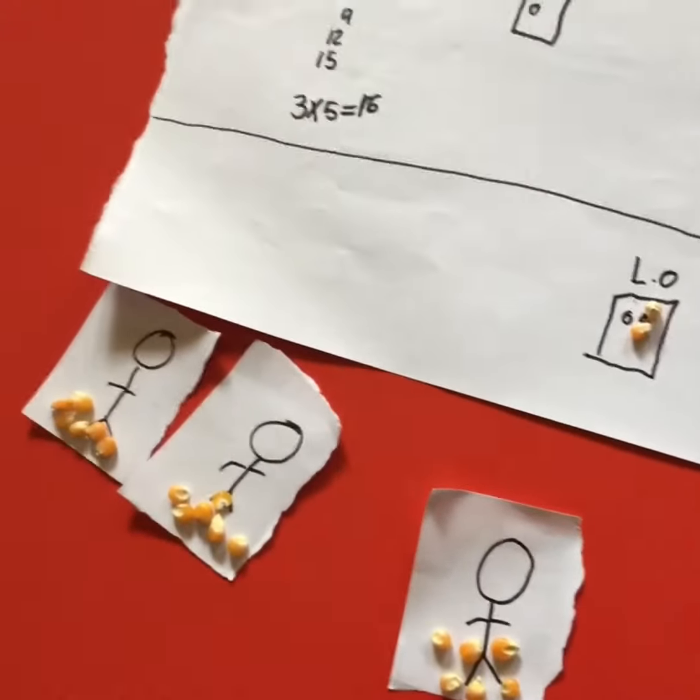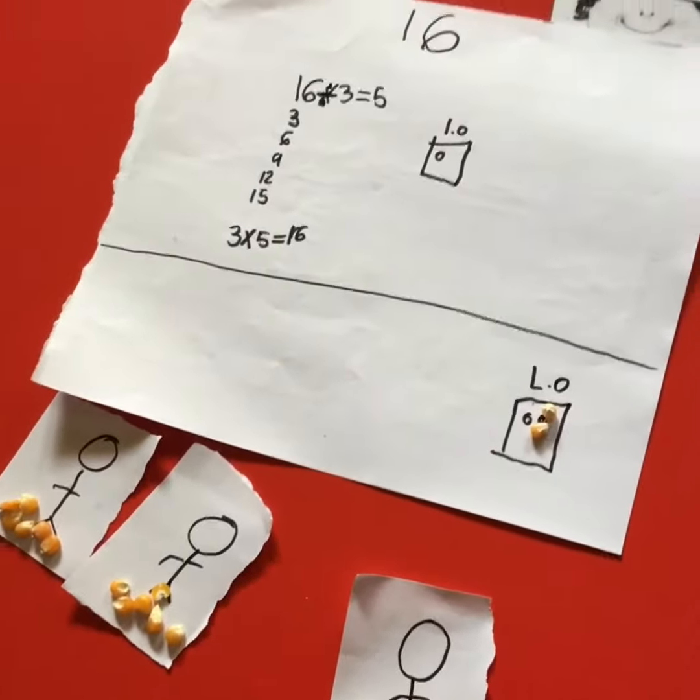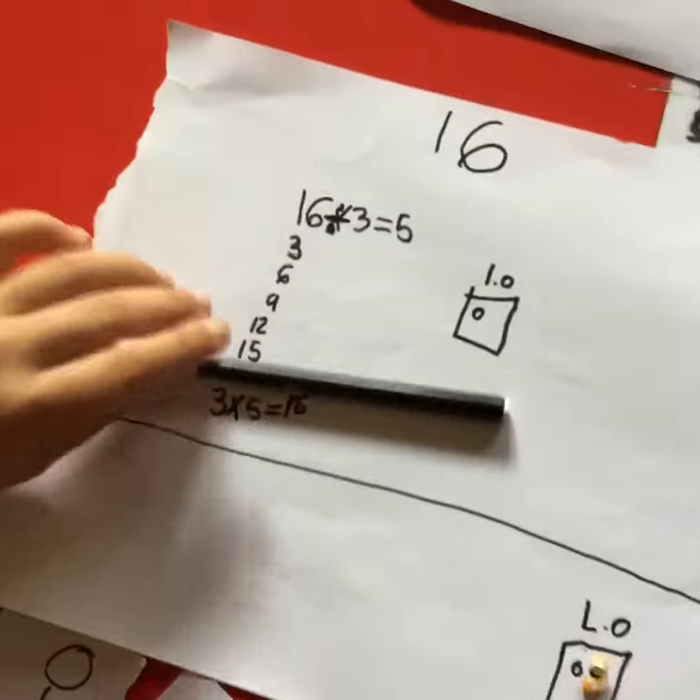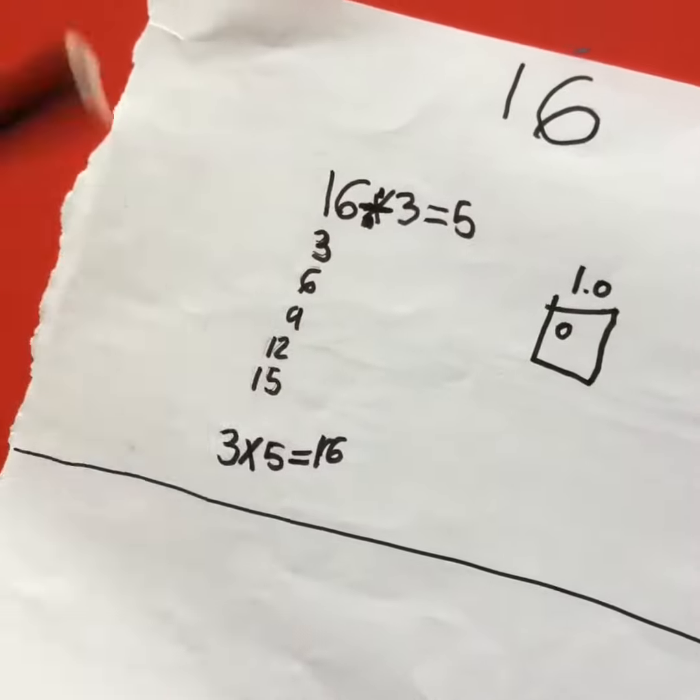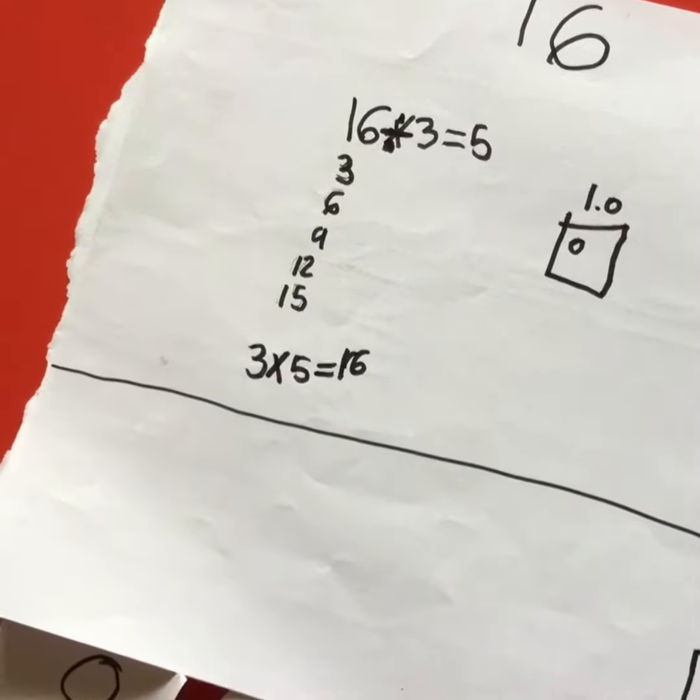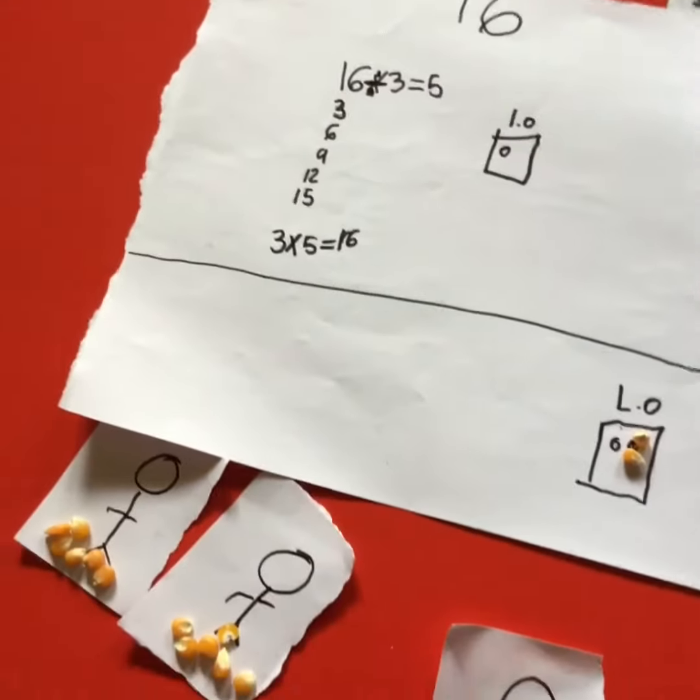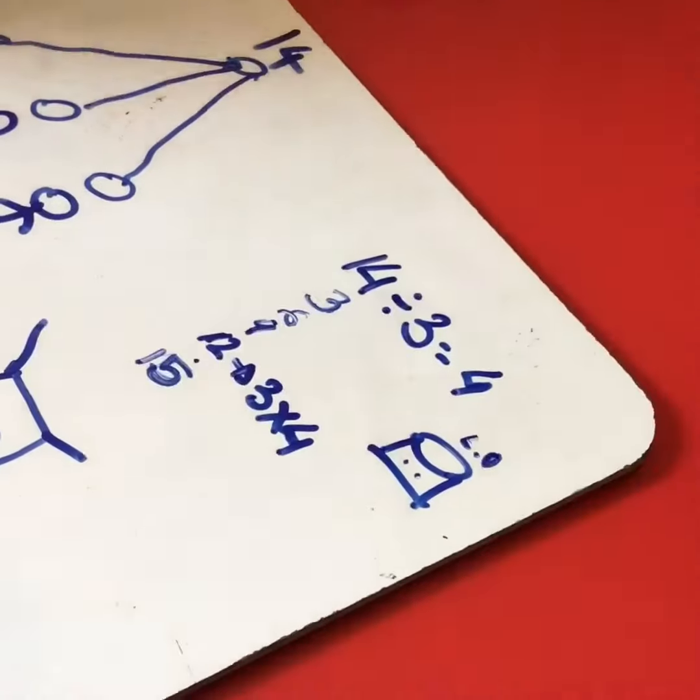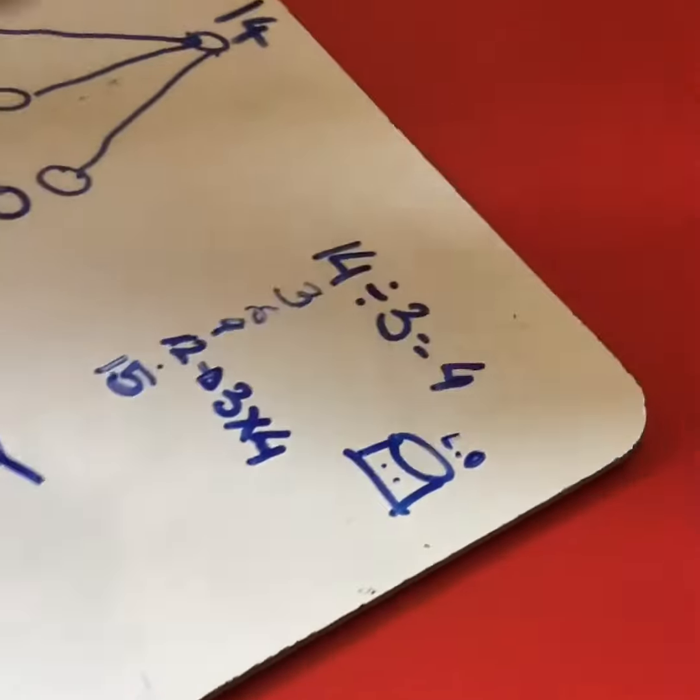So what I did was first I did the division and I got five because of 15. If you go three more it would be over, it would be 18. So you have to multiply 3 to the closest number.